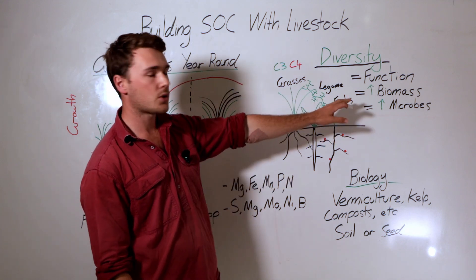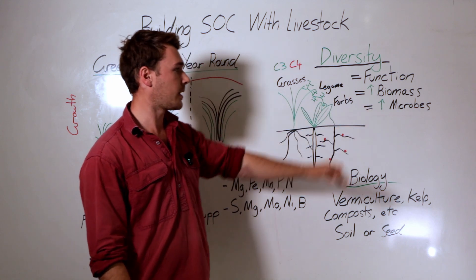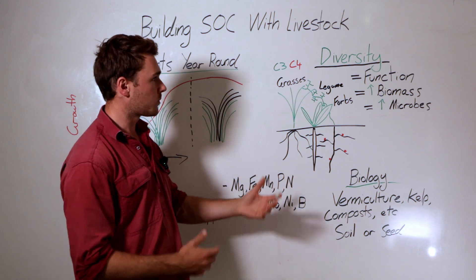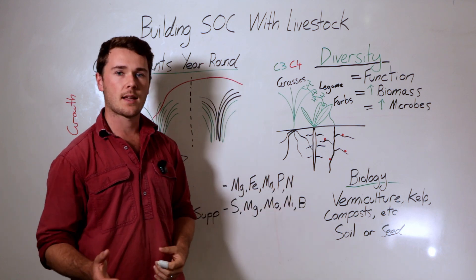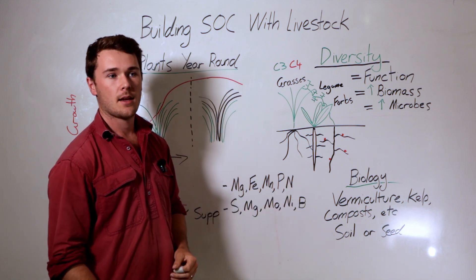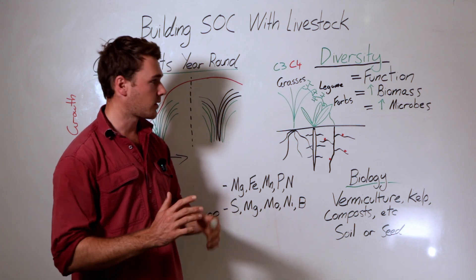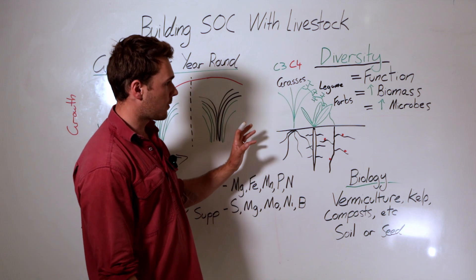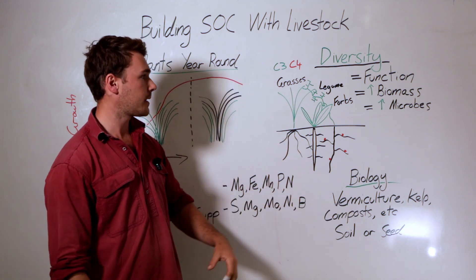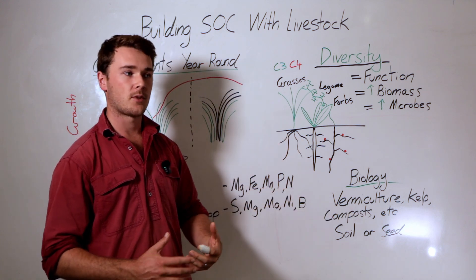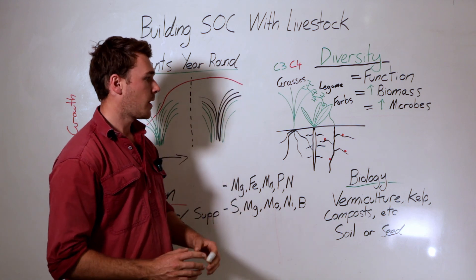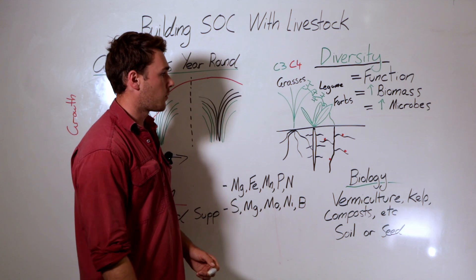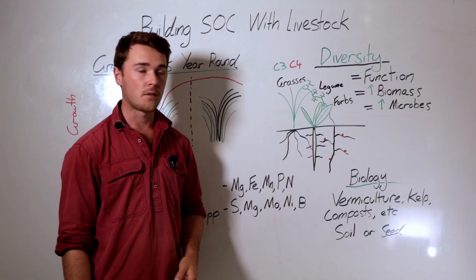With biodiversity we increase biomass production. We also increase microbial activity because an increase in plant diversity stimulates quorum sensing. Effectively, once you reach a threshold of plant diversity, microbes reach a trigger point where their activity rapidly increases. For that, you want at least four different families of plants.